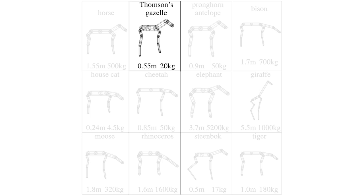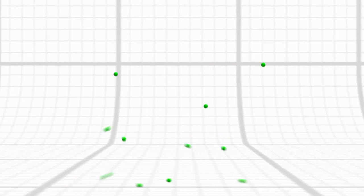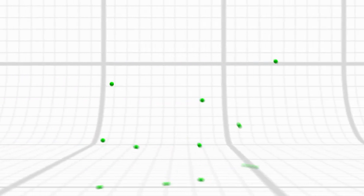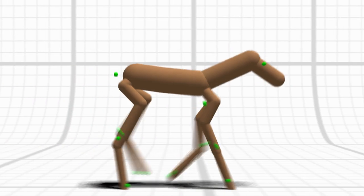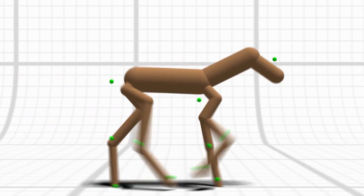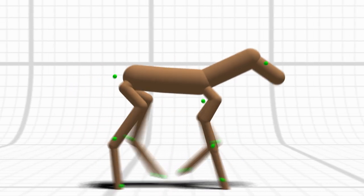We will use the gazelle as an example of how this data is processed. For each animal, we track a series of key points over the course of the video. A space-time constraints optimization is then solved to fit a physically valid gait cycle to the motion of these points. This gait cycle represents the ground truth gait for the animal.